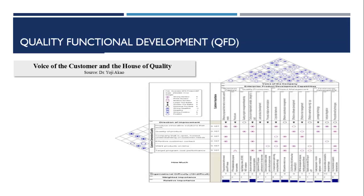What should be the role of leaders and all employees of an organization in satisfying customer needs? Quality Function Deployment is the voice of the customer. It is a method intended to transform user demands into design quality, to deploy the functions forming quality, and to deploy methods for achieving the design quality into subsystems and component parts, and ultimately to specific elements.